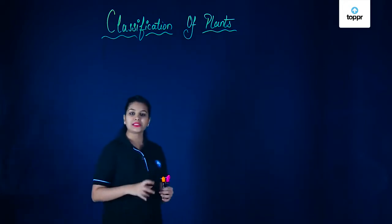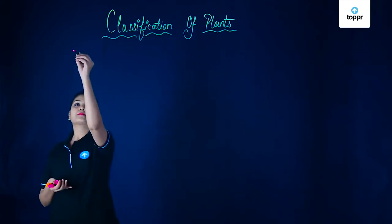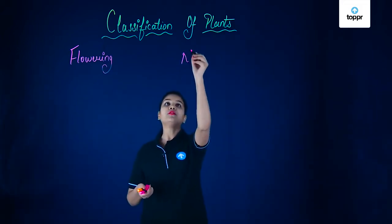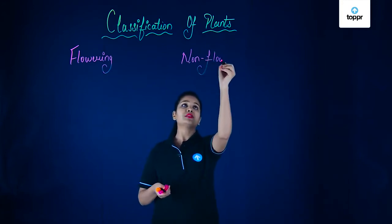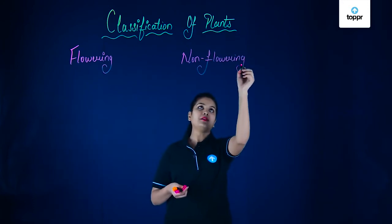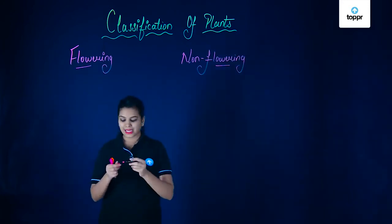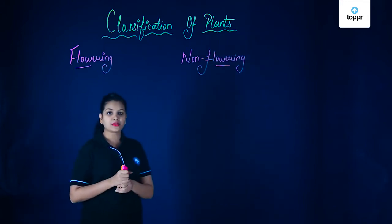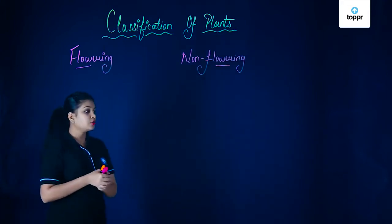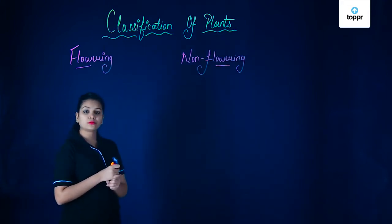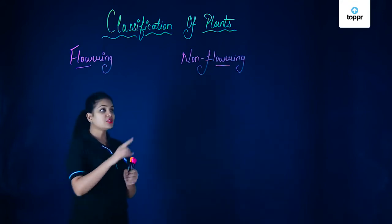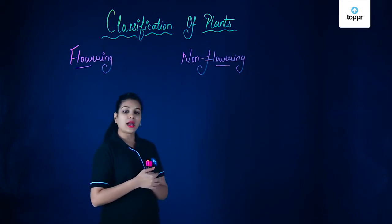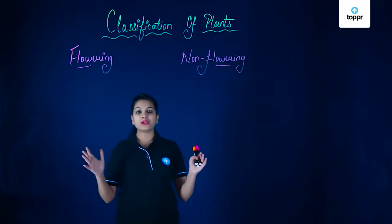We can broadly divide plants into two main categories: flowering and non-flowering plants. Flowering plants, as the name says, are the ones which have flowers. Non-flowering plants do not bear flowers. Some common examples of flowering plants are rose, mango, hibiscus and many more. Non-flowering plants are usually lower plants; examples include mosses and ferns. This is the broad category of classifying plants.